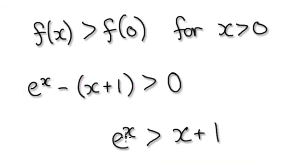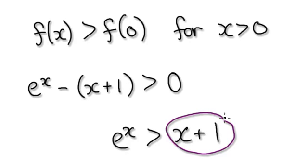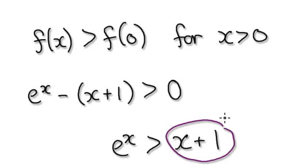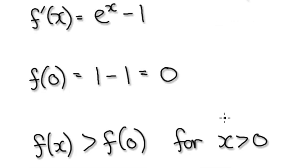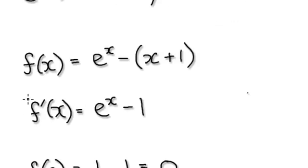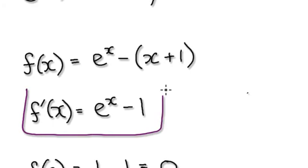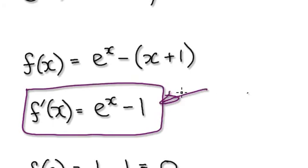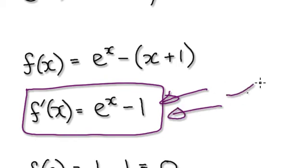So therefore, e^x must always be bigger than x plus 1. The key to doing this is to realize that once f prime must always be bigger than zero — if the gradient is always bigger than zero, it must mean that the original function must always be climbing.